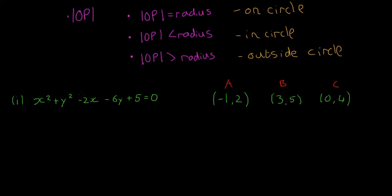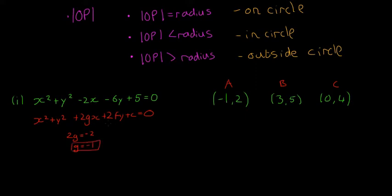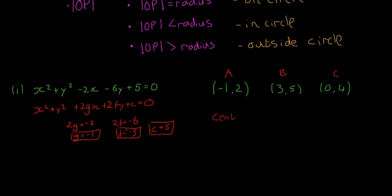We'll start by finding the center point and the radius. Writing the general form: x squared plus y squared plus 2gx plus 2fy plus C equals 0. So 2g = −2, giving g = −1; and 2f = −6, giving f = −3; and C = 5. The center is always (−g, −f), so the center is (1, 3).